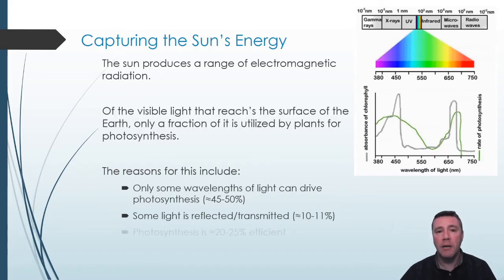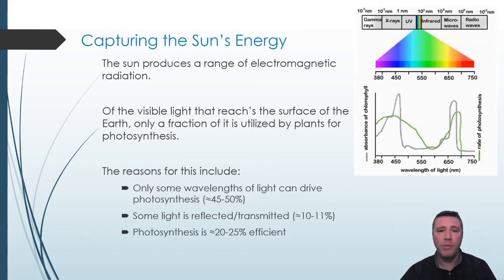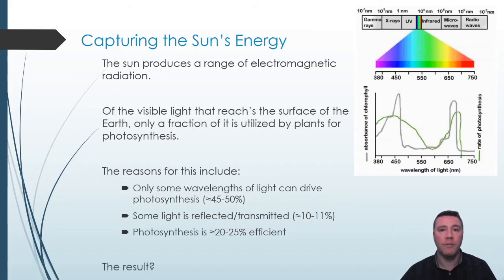And finally, biochemical processes are not 100% efficient, and photosynthesis is no exception. So what's the result? 20–25% of 10–11% of 40–45% is about 1%. Only about 1% of the sun's visible light that reaches the Earth's surface ends up being used to drive photosynthesis.